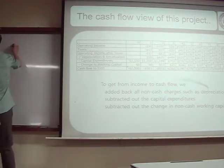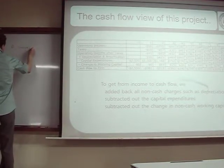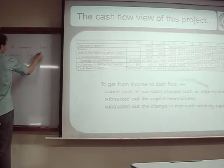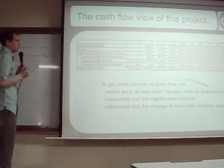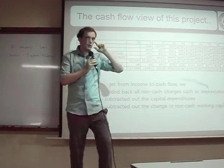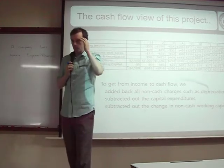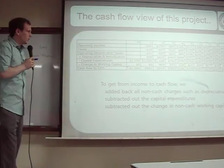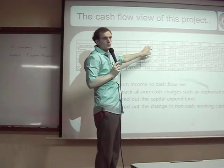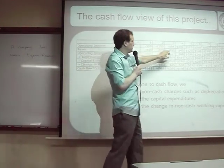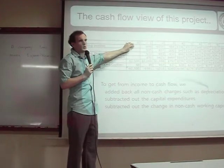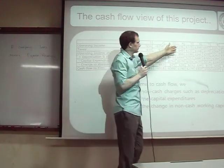If a company loses money, it means expenses are going to be higher than revenues. If expenses are higher than revenues, operating income is going to be negative — we're losing money and we don't pay any tax. In year four, revenues are higher than expenses and we start paying tax.